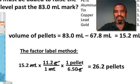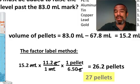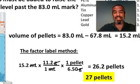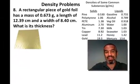Now, you can't really take 26.2 pellets. They're individual things. It can't be broken apart. So really, to make it go above the 83 milliliter mark, we don't want to round down. We want to round up. So the answer is 27 pellets.